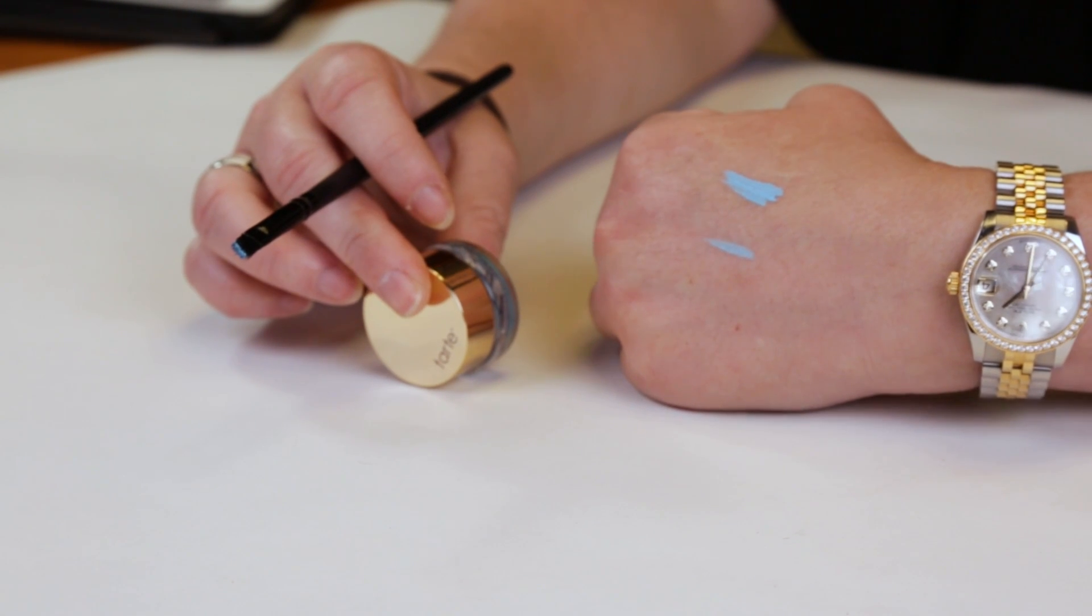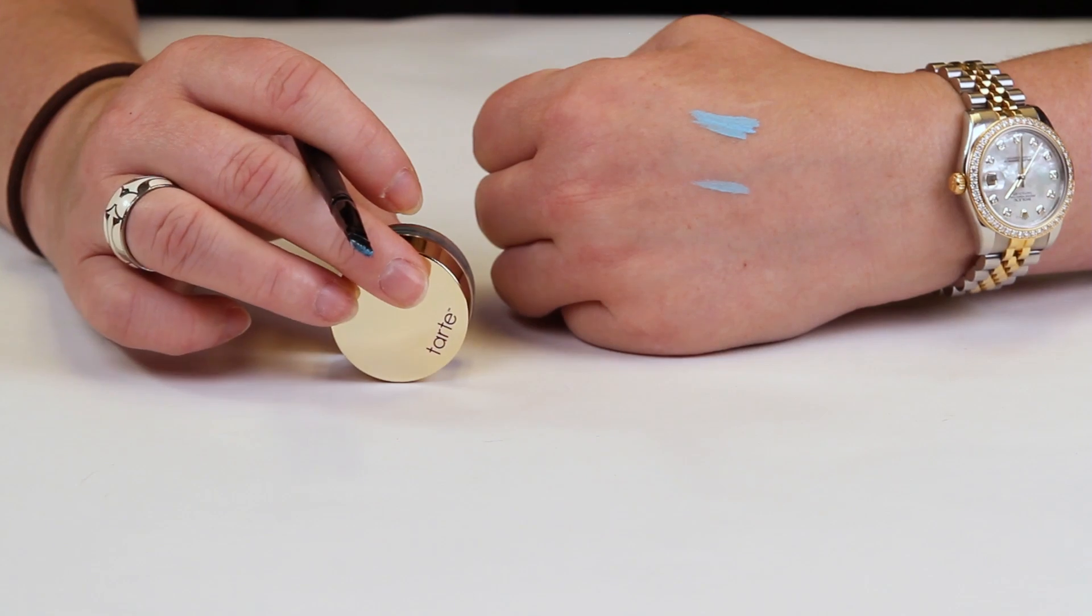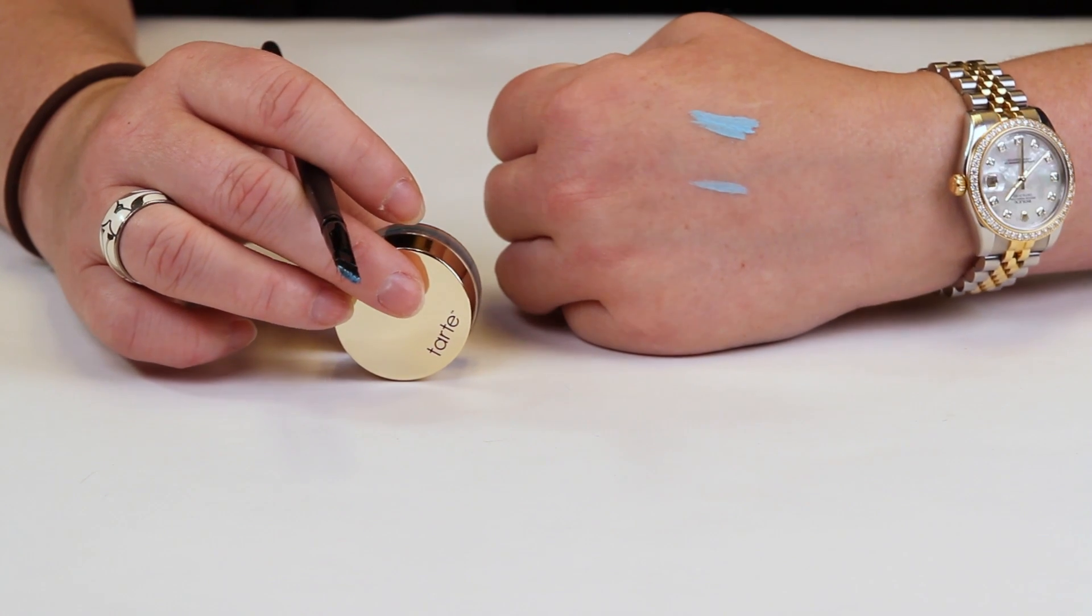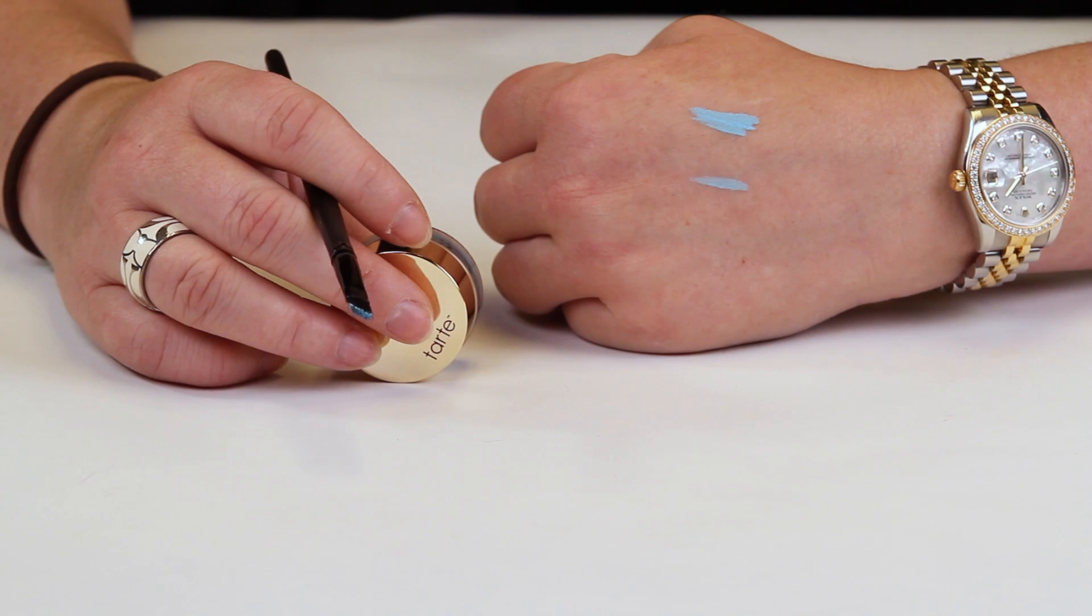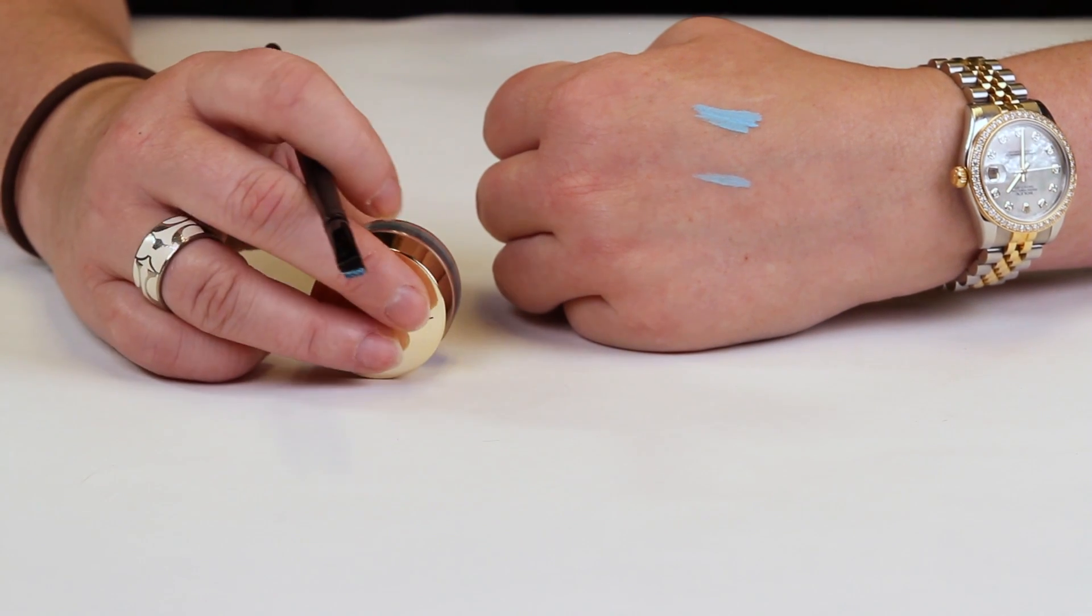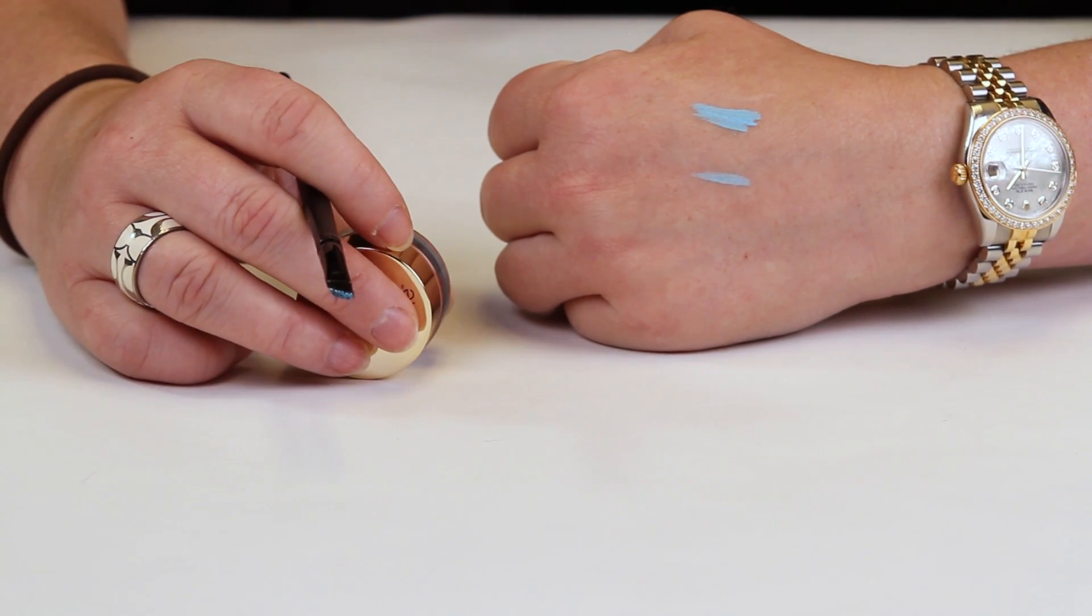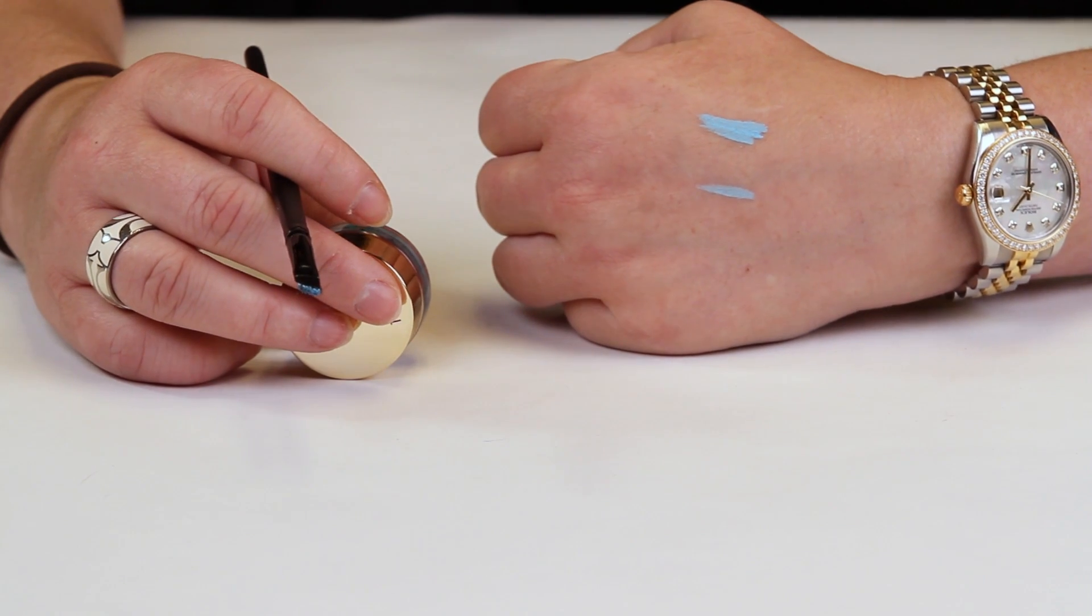If you're going to use this, make sure you've got eye makeup remover on hand because you will need that to remove this. It's very tenacious. But maybe good for the summer months if you're going swimming or out and about on the lake. This might be a nice option because it is very waterproof.